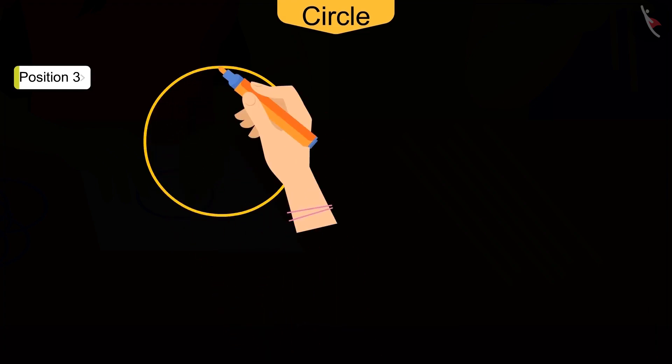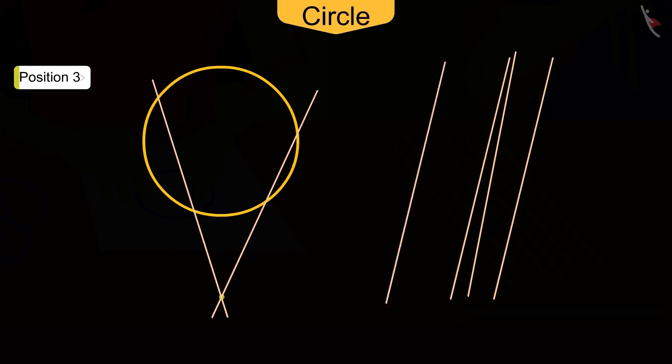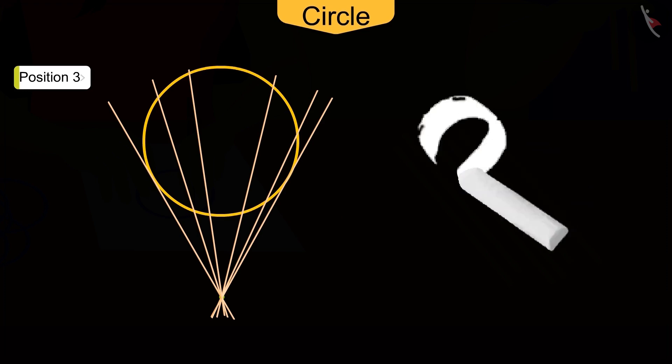Let there be a point outside the circle. And arrange the sticks in such a way that each stick passes through this point. So, what do you see here now?